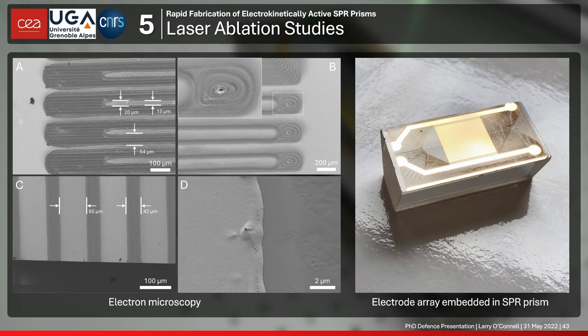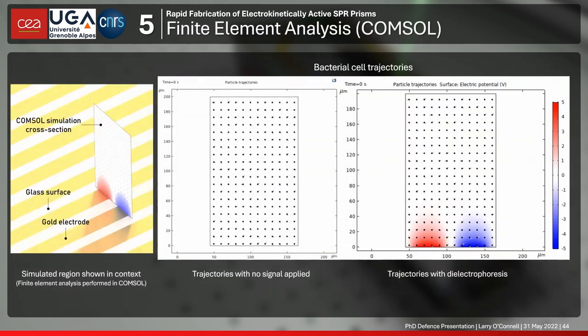This turned out to be very well suited for electrode trapping experiments. This is a real SPR prism developed by this process. I carried out finite element analysis in COMSOL just to confirm that this geometry would be able to trap the bacteria. The simulation shows a slice through the volume just above the electrode array. I initialized the bacteria with run-and-tumble motility: on the left with no dielectrophoretic signal applied, and on the right with dielectrophoresis.